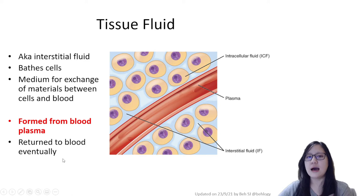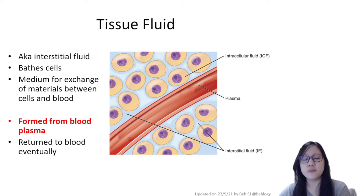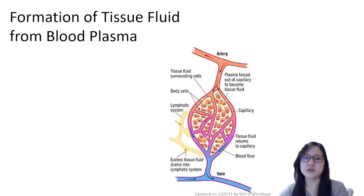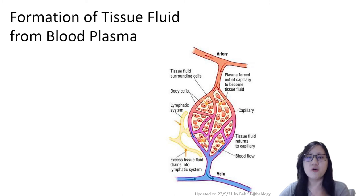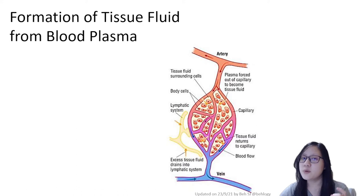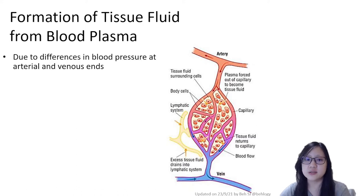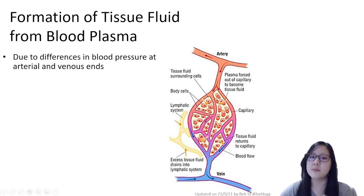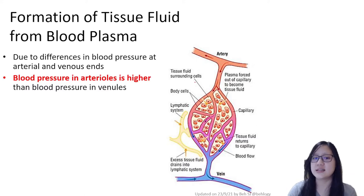So let's see how tissue fluid is formed and how it is returned to the blood. Formation of tissue fluid in simple words is due to differences in blood pressure at the arterial and venous ends.